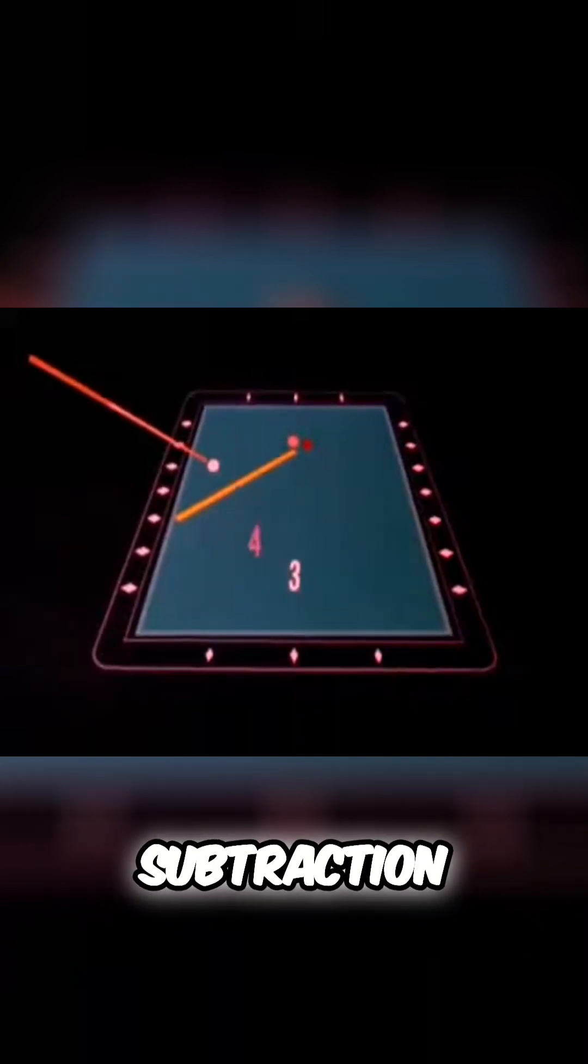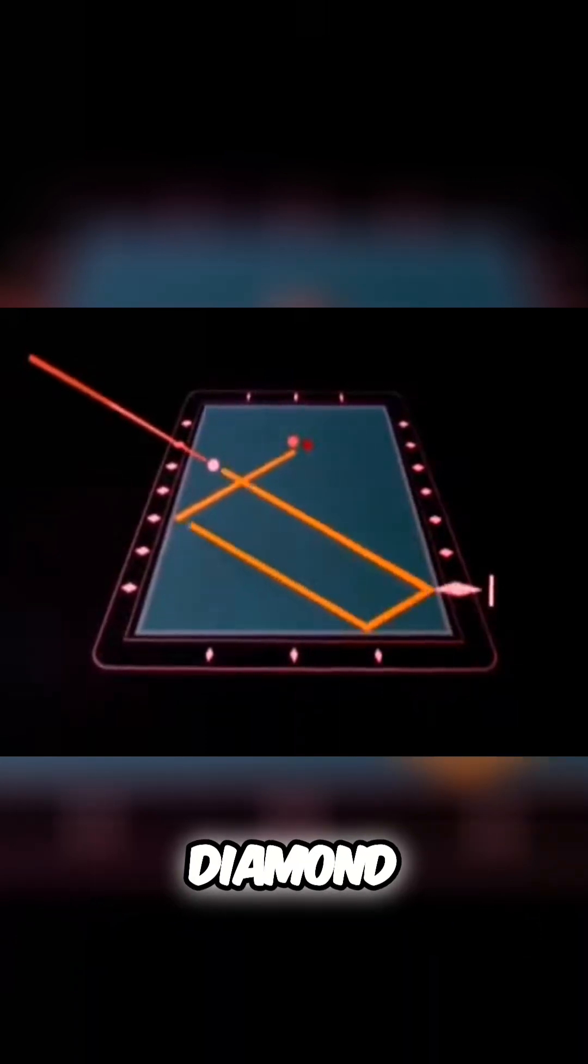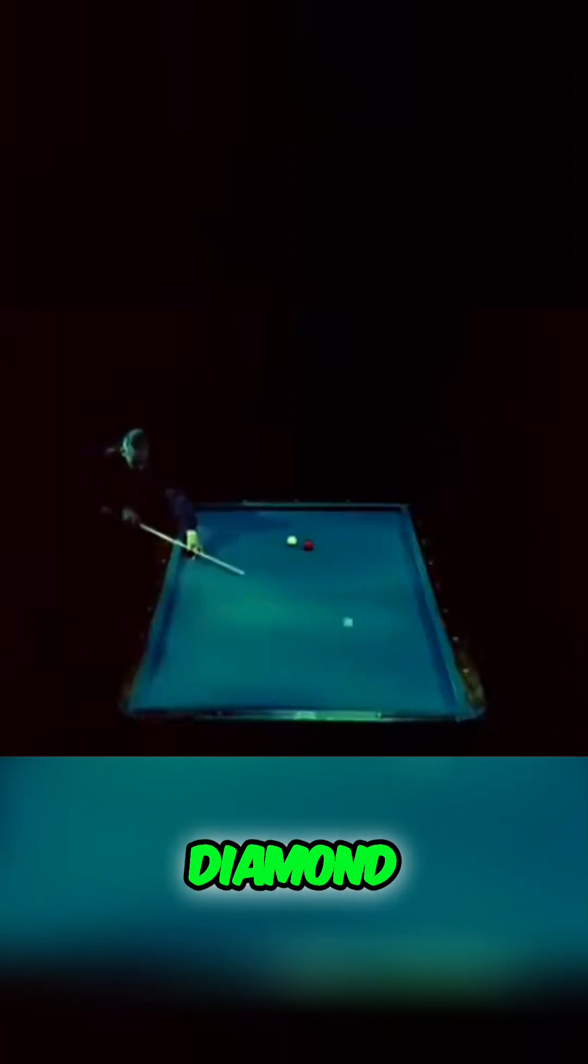Now a simple subtraction. Three from four is one. So if he shoots for the first diamond, he should make it. It's called playing the diamond system.